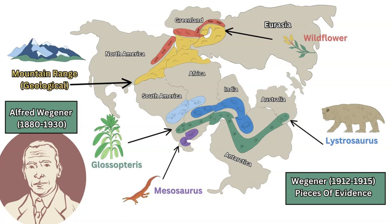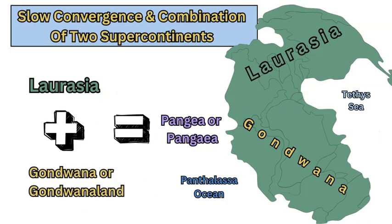So Alfred Wegener became famous for this theory of continental drift. In 1912, and then again published in 1915, he suggested that through the evidence presented all the continents were in the past connected in this one large supercontinent called Pangaea. Pangaea is Greek and means 'all Earth.' This large landmass included the majority of all the current present-day landmasses joined together, and this landmass was centered around the equator.